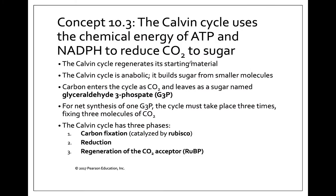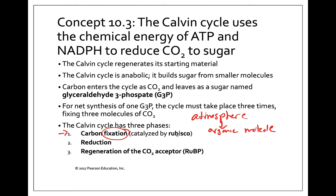The Calvin cycle is going to occur in three main phases. The first phase is carbon fixation. This process of fixation is taking something from the atmosphere and attaching it to an organic molecule. So the plant has to pull carbon dioxide, a gas, out of the air and attach it to an organic molecule. This is going to use an enzyme called Rubisco.